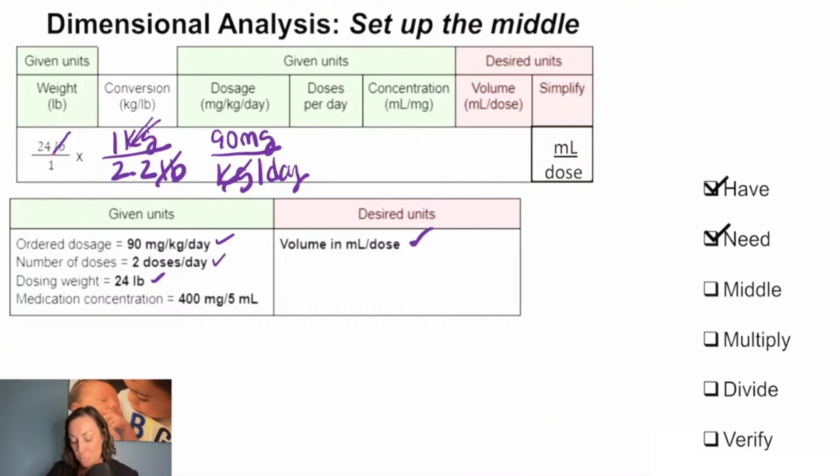I'll take this next one: two doses per day. Where will I put my days, on the top or the bottom if we're trying to get them to cancel? Right now we have days on the bottom here, so we'll put them on the top here, right? So one day over two doses, and we see that our days will cancel.